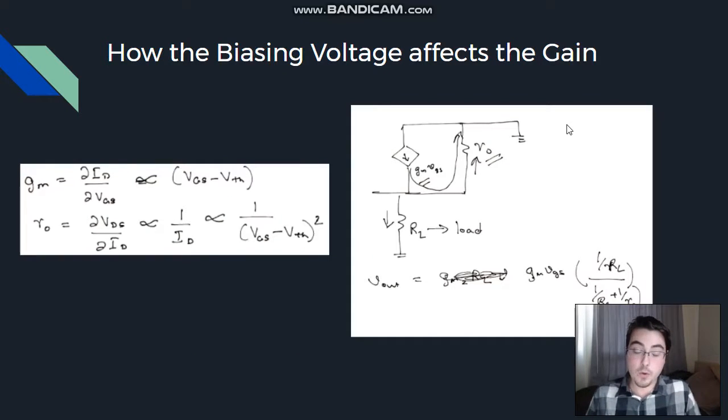Now, how does the biasing of voltage affect the gain of the system? Well, if we use small signal analysis on the latter half of the original circuit here, we can see exactly how the voltage bias will affect it. Our voltage bias can also be written as VGS because our voltage bias is the DC voltage source at our VGS side of the MOSFET. So, we can use these to approximate different values in our small signal circuit.